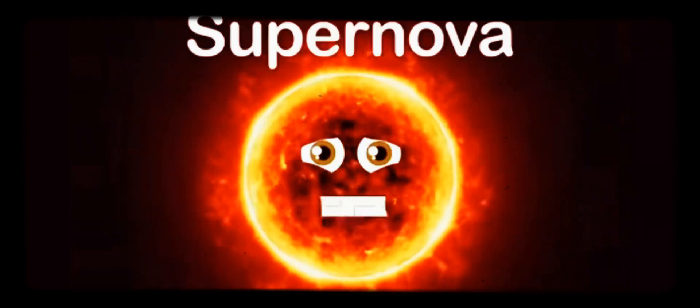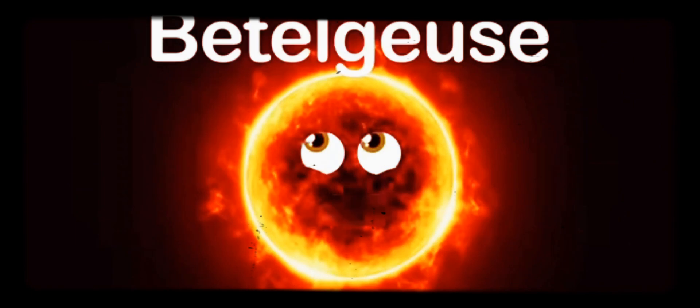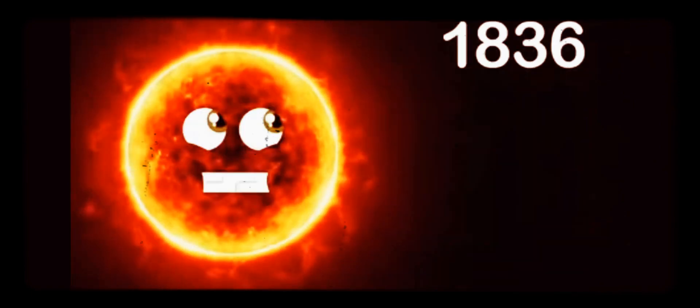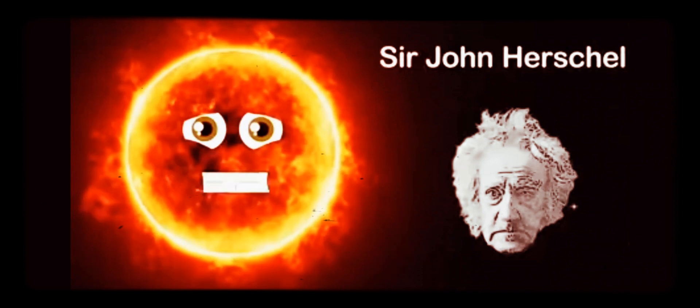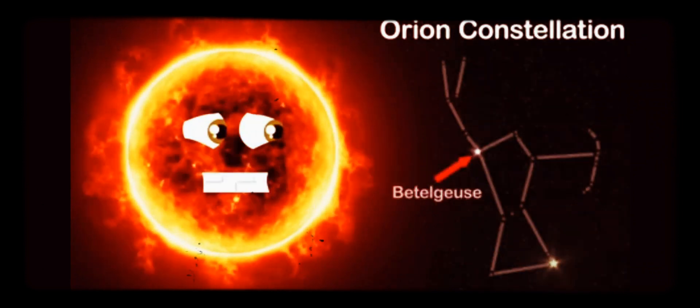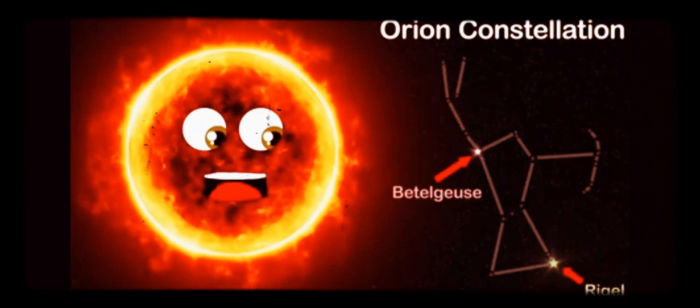Explode into a supernova in a hundred thousand years or so. I received the name Betelgeuse in 1836 by Sir John Herschel, an astronomer and a great scientist. I'm the second brightest star in the Orion constellation after the star Rigel, seen from any of Earth's nations.